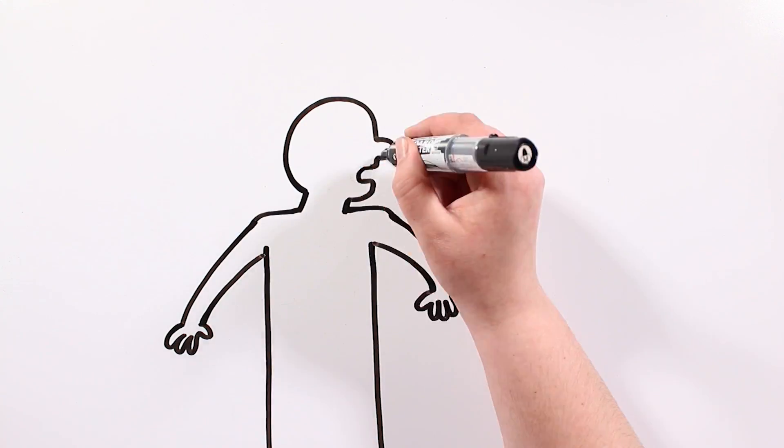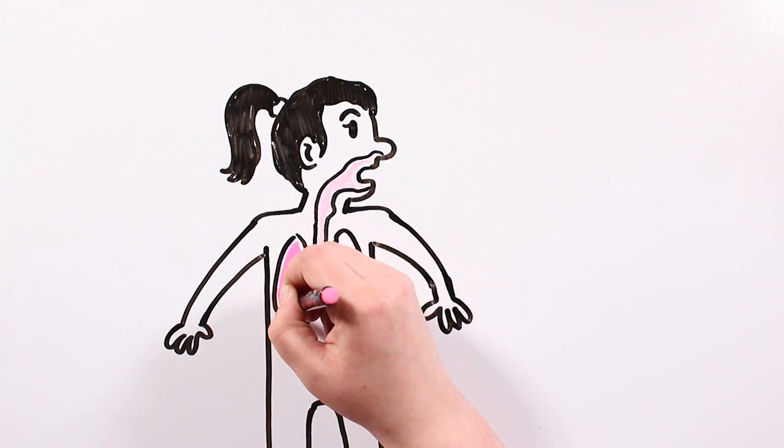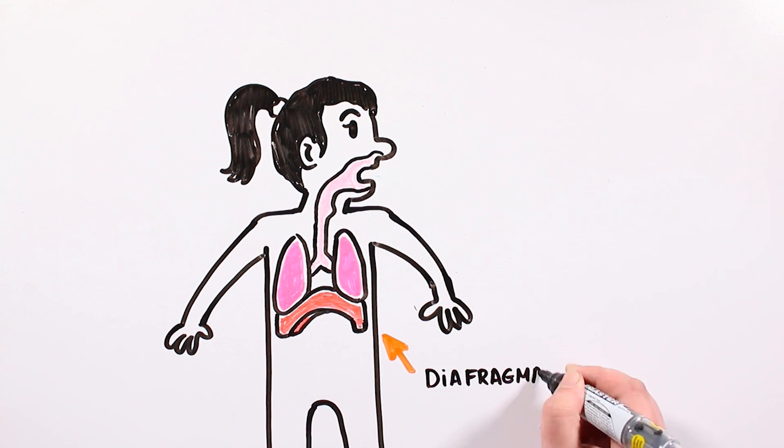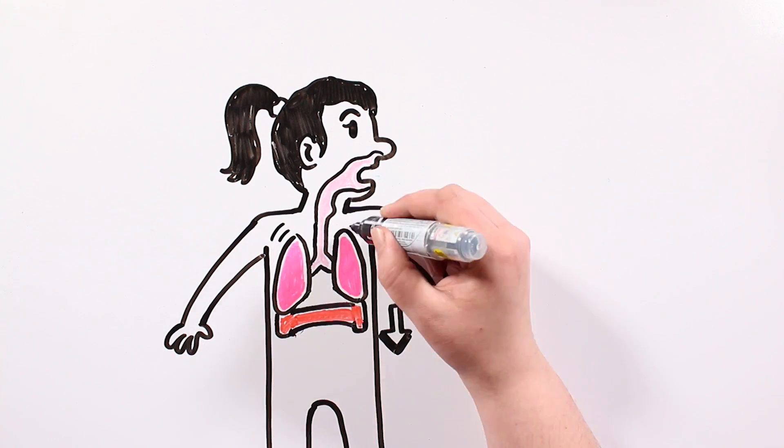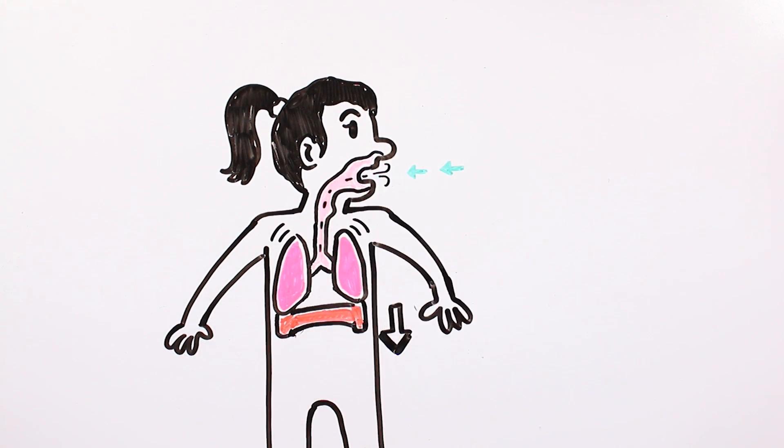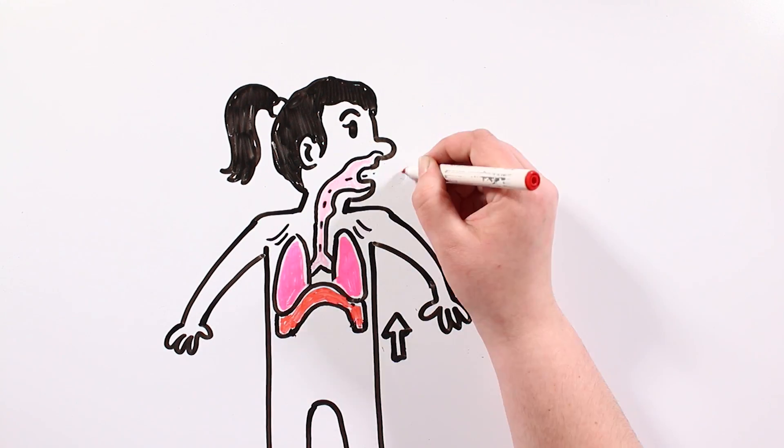The diaphragm is a muscle located between the thorax and the abdomen, and it helps with the breathing movements. It descends when we inhale, to help us fill the lungs with air, and it ascends when we exhale, so the air can leave our lungs through our nose and mouth.